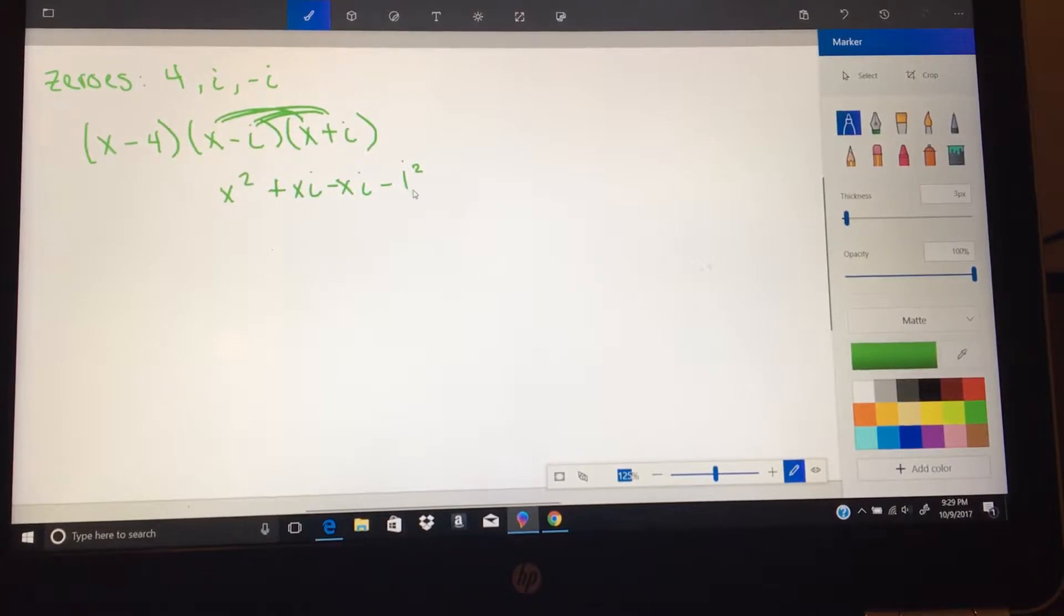i squared, of course, is negative 1. So we're going to take this and change that into a negative 1. So this becomes minus negative 1. These two terms here cancel each other out. And I have x squared minus negative 1 that turns into plus 1.